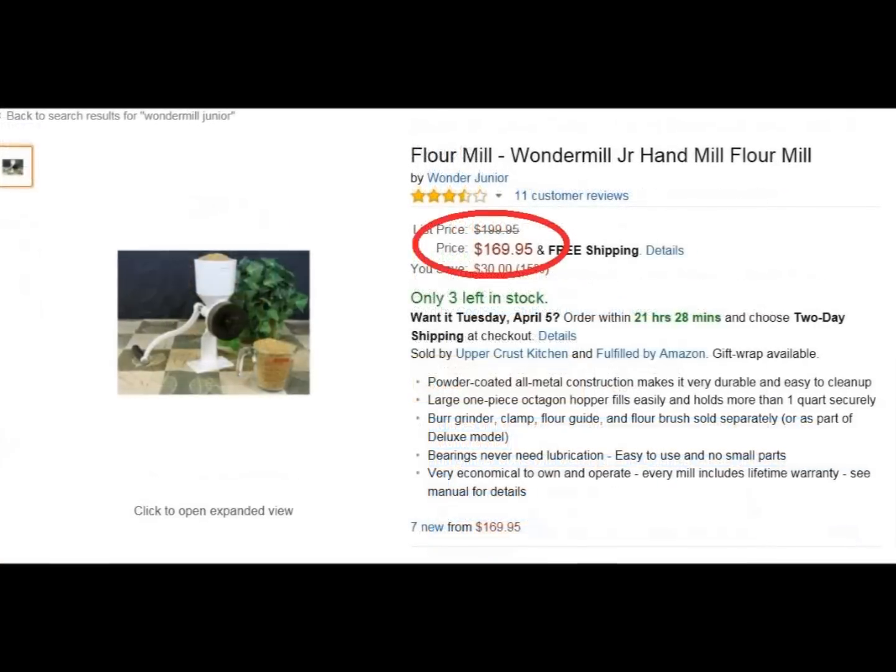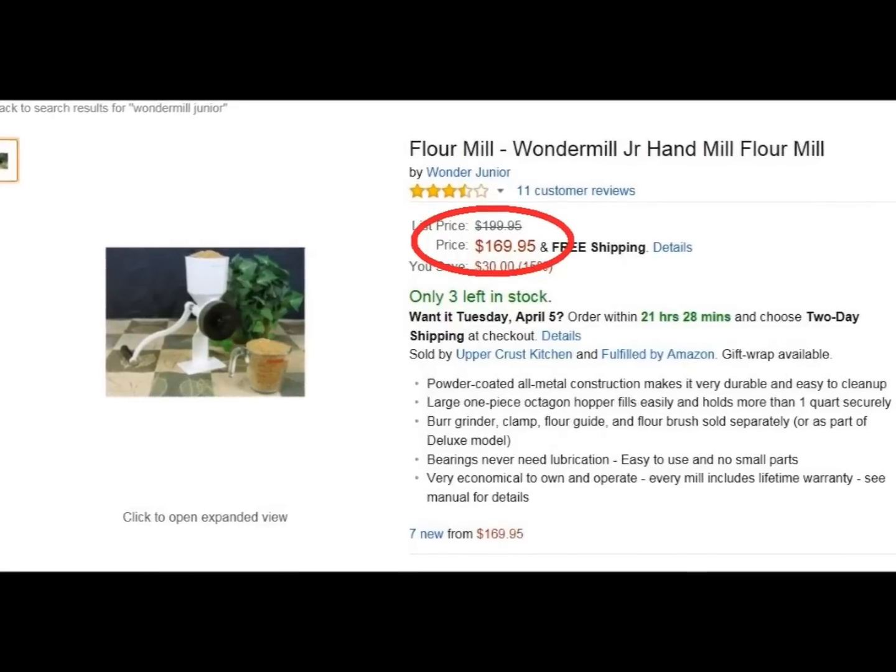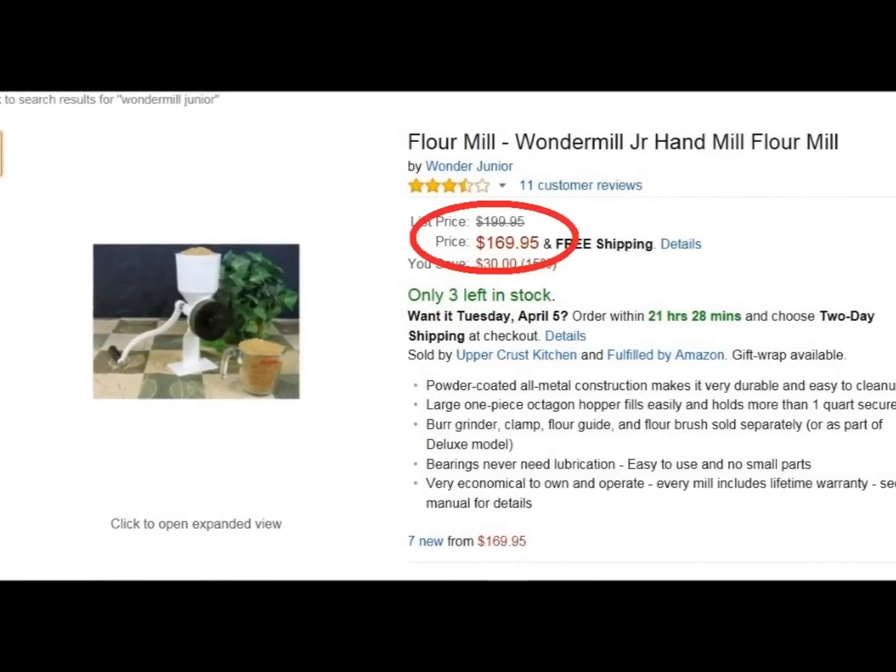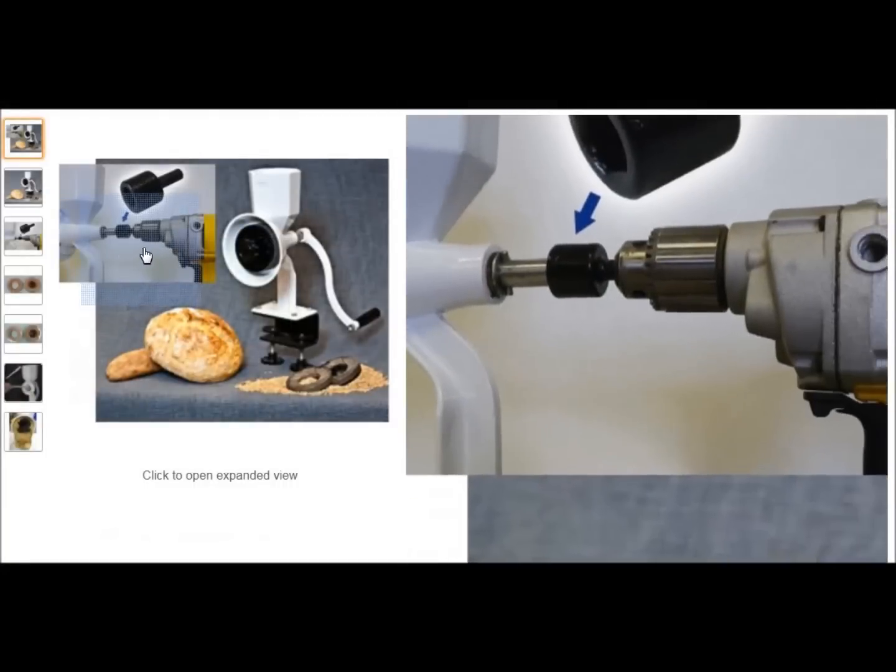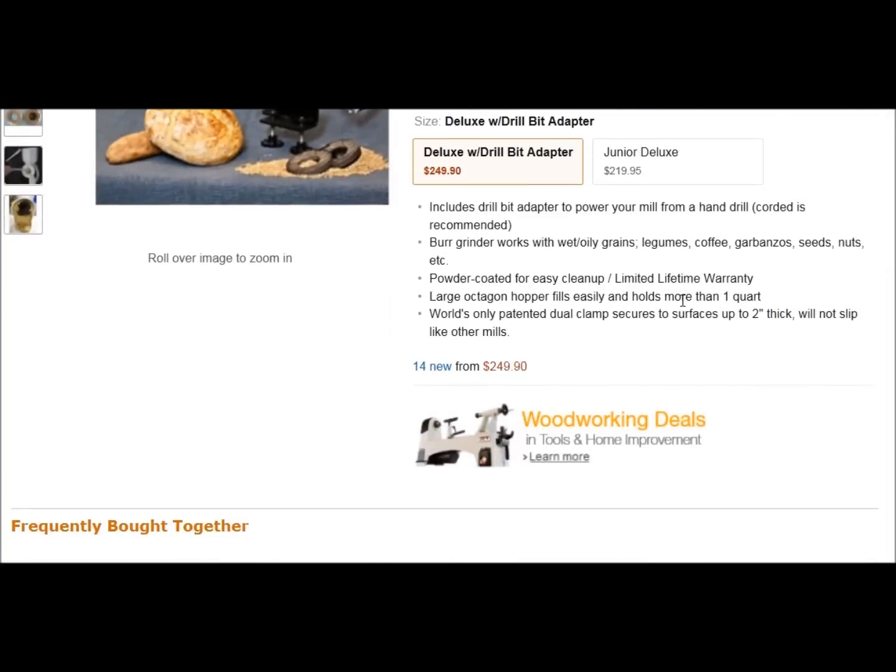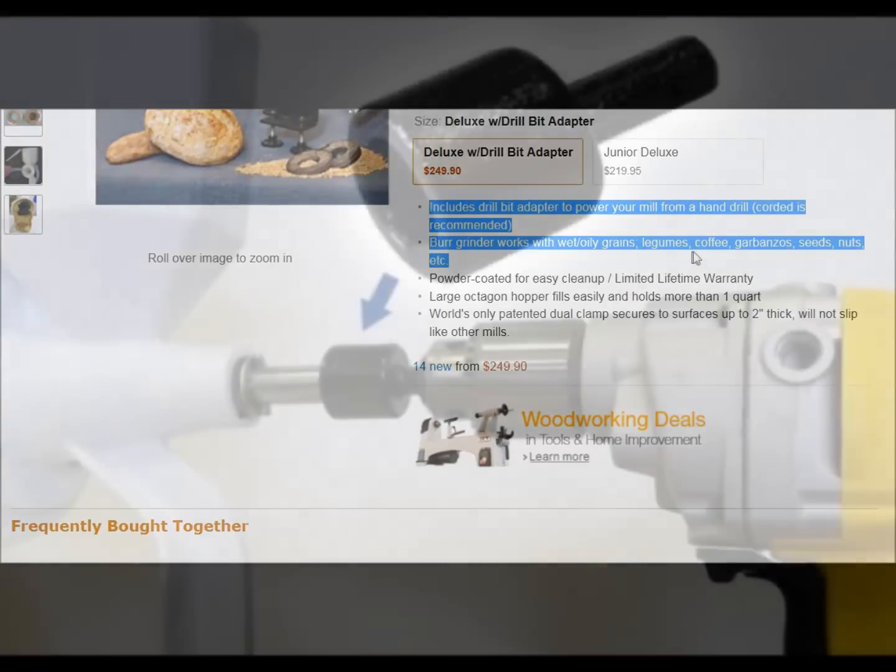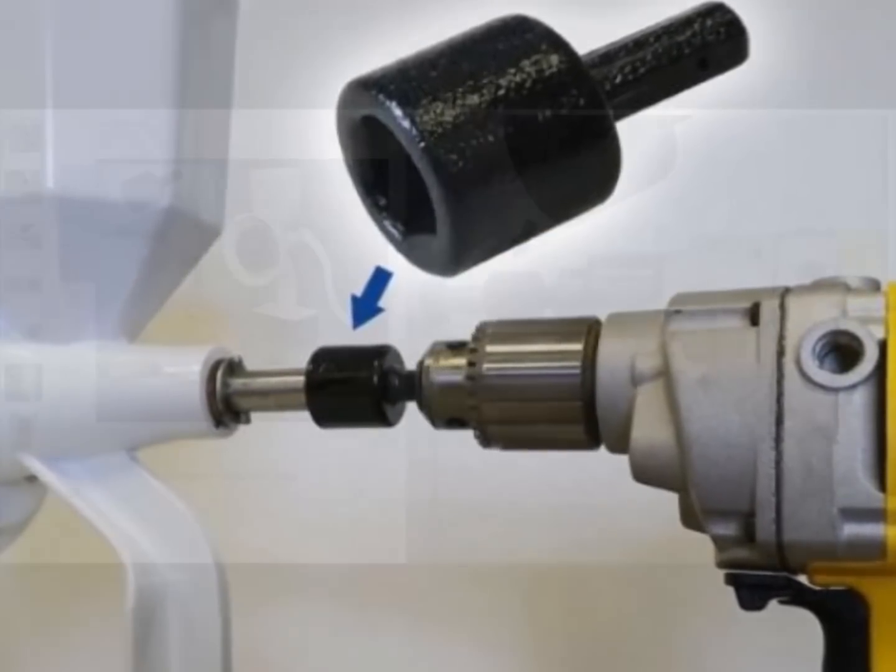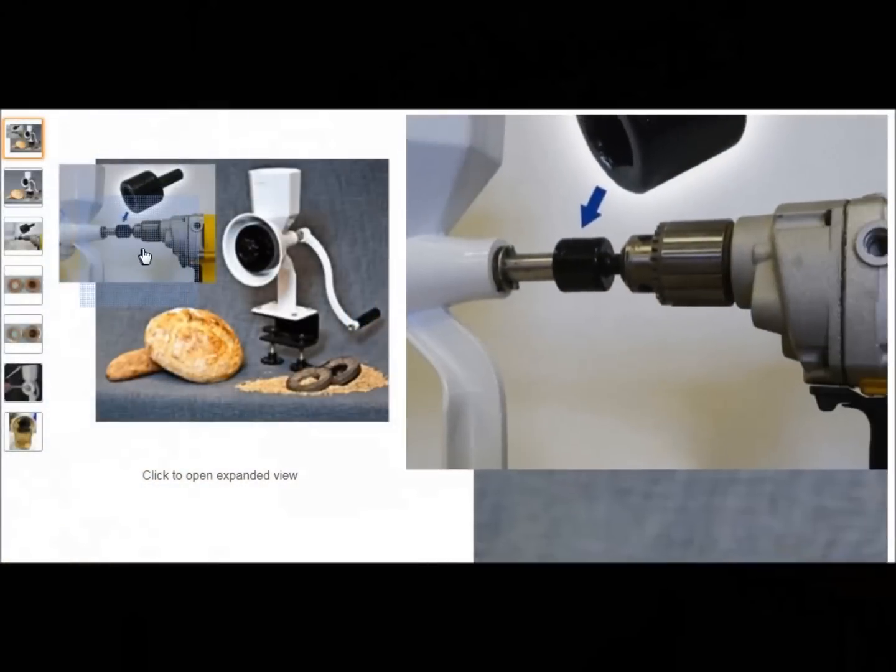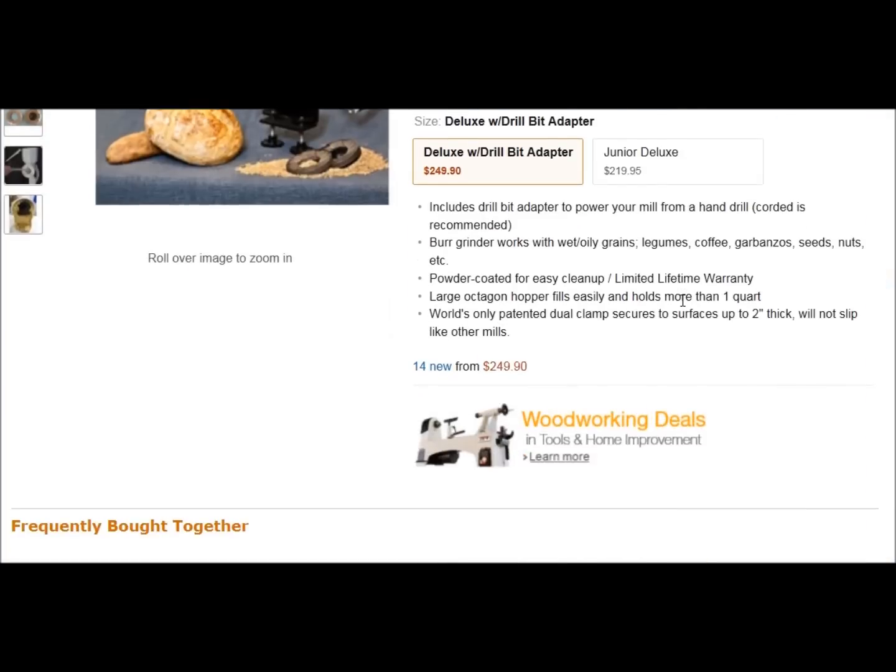Now, you can get the regular Wonder Mill Junior even cheaper at around $170, but it does not come with the countertop clamp, which means you'd either have to bolt it to your countertop or bolt it to a plank of wood. And it also doesn't come with the drill bit adapter, and it also does not come with the steel plates, which allow you to make peanut butter or grind coffee beans. So let's take a look at it, and let's see how it works.